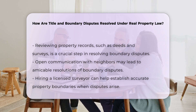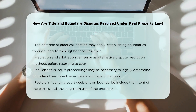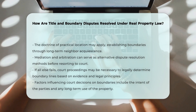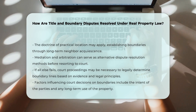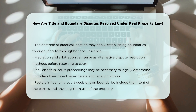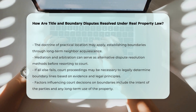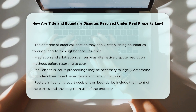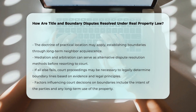If negotiations and surveys do not resolve the dispute, parties may turn to mediation or arbitration. These processes involve a neutral third party to help reach a mutually acceptable agreement without going to court. However, if these methods fail, legal action may be necessary, involving court proceedings to determine the boundary line based on evidence and legal principles. In court, the decision on boundary lines can be influenced by various factors, including the intent of the parties as reflected in deeds and other documents, as well as extrinsic evidence to clarify any ambiguities. The court may also consider whether there has been a practical location of the boundary line through long-term use and acquiescence.